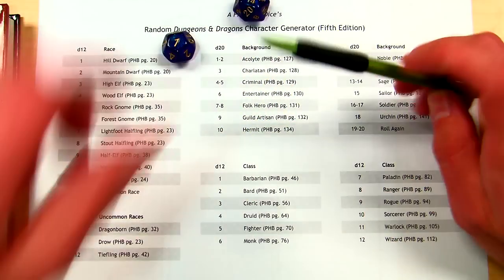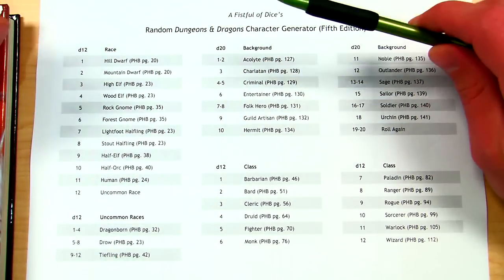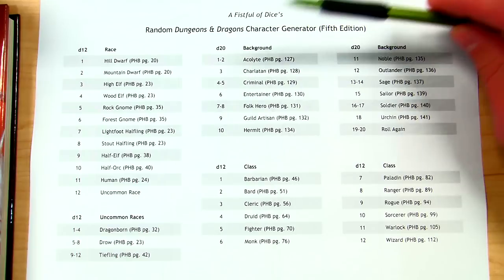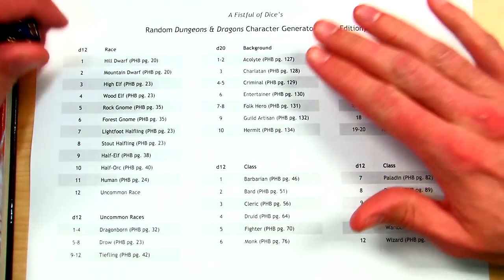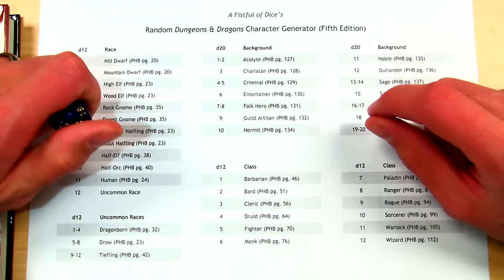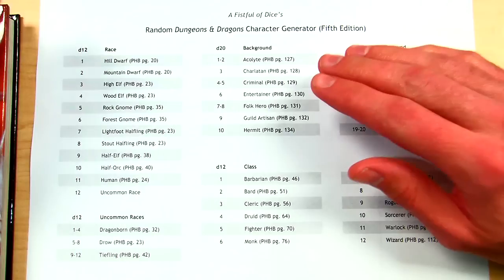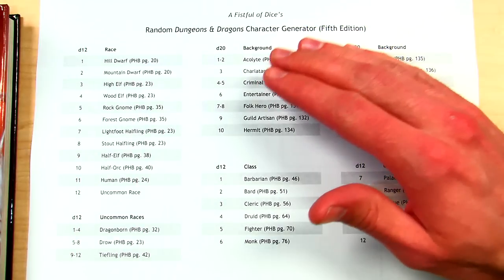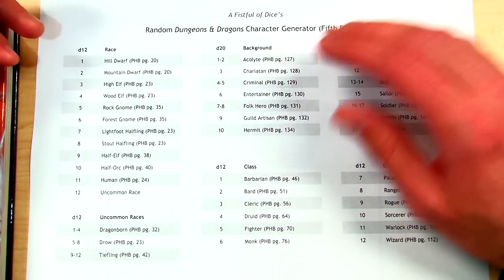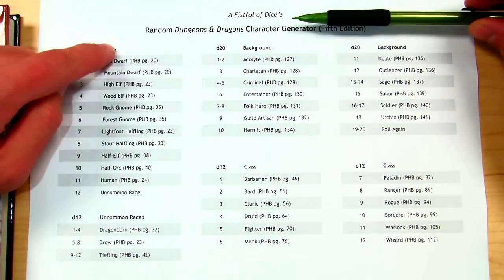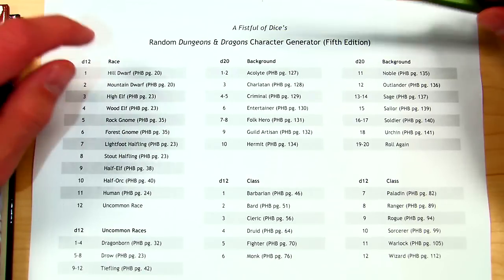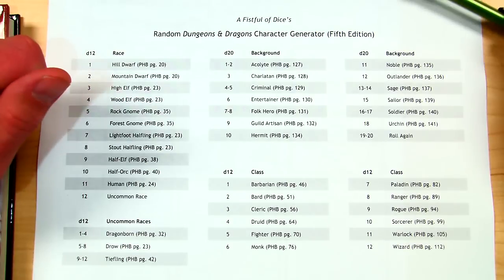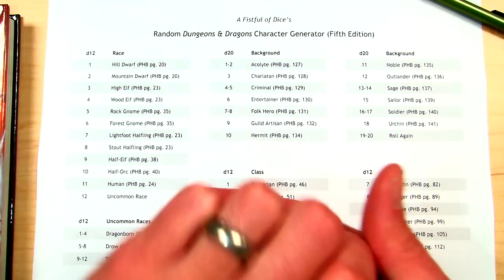In my first two videos I created a fighter and a bard, so today we're going to be creating another one. This time I'm going to be a little less heavy on the rules — if you're new to this, I'd recommend watching my first two videos for more detail. I'm going to be using A Fistful of Dice's random D&D character generator for 5th Edition, available on his website — link in the description. He's got a great channel and website; I recommend him.